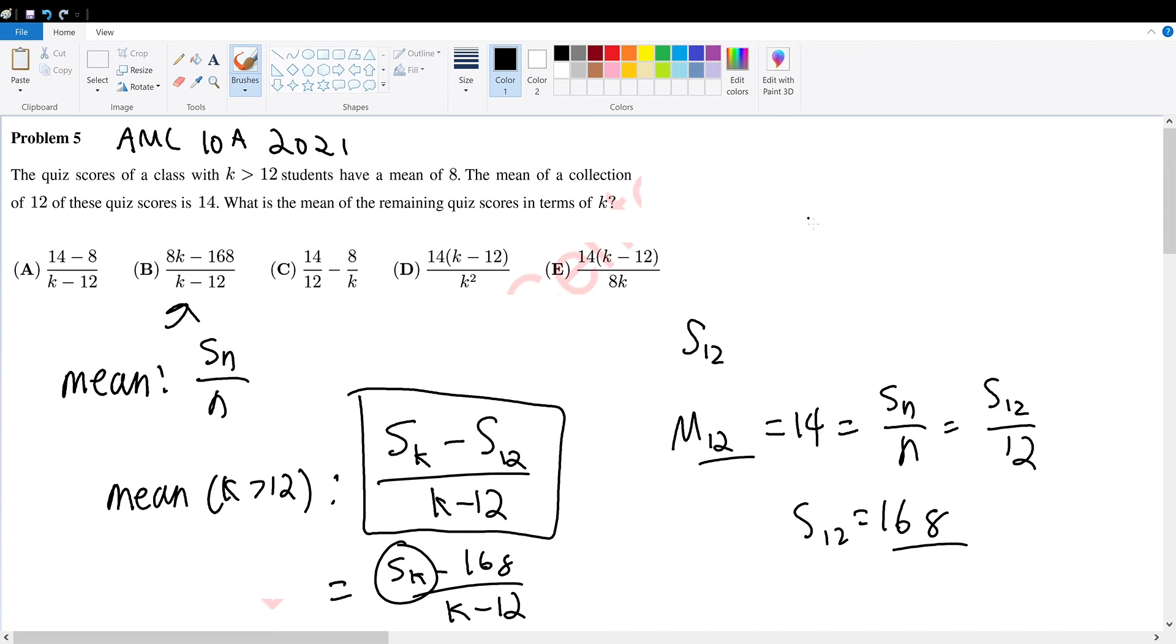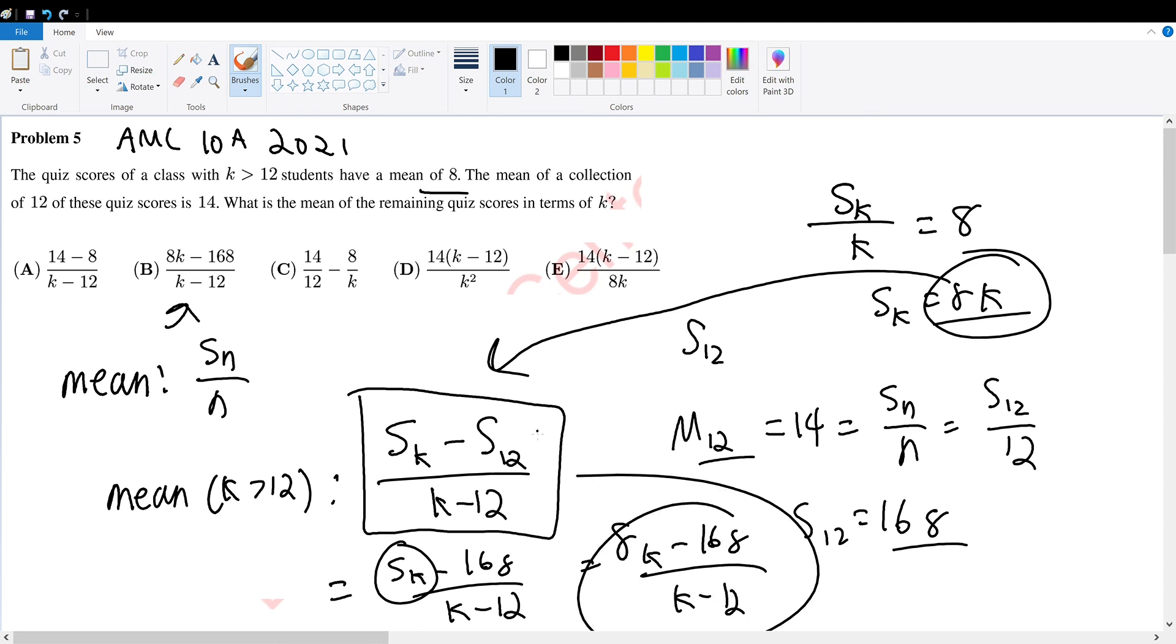So how do we find S of k? Well, S of k is very simple to calculate. We know that k is greater than 12, so that means the mean is 8. So we can utilize this information. If we have sum of k divided by our k students, that would be equal to a mean of 8. So therefore, S of k will be equal to 8k. And hence, we can substitute into S of k to get 8k minus 168 over k minus 12, bringing us to answer choice B.